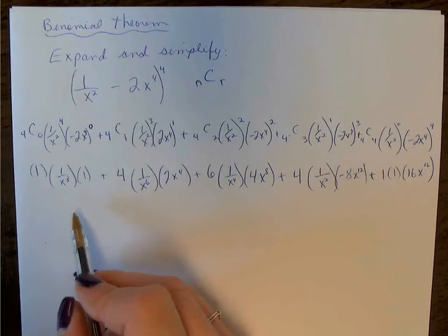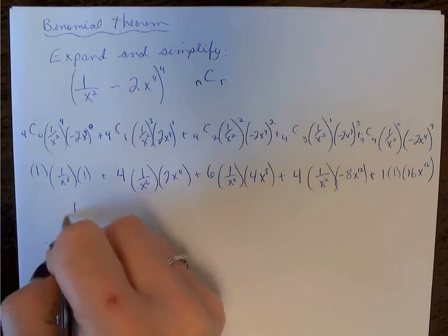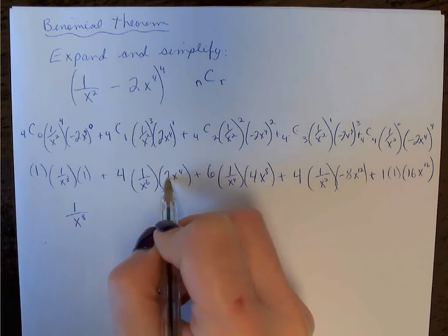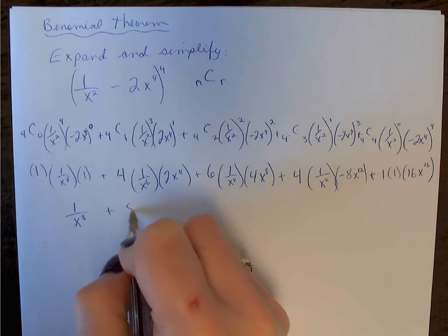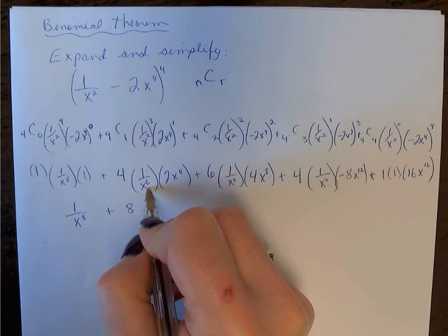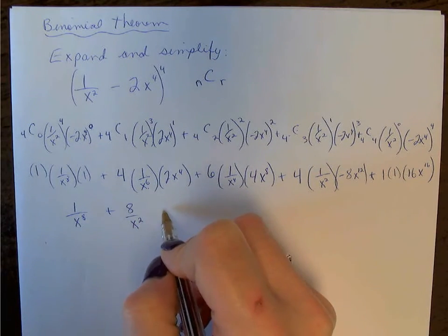Now let's look and simplify anything we can here. So we've got 1/x to the 8, 4 times 1 times 2, so we have positive 8, x to the 4 over x to the 6. You're going to have x squared remaining in the denominator,